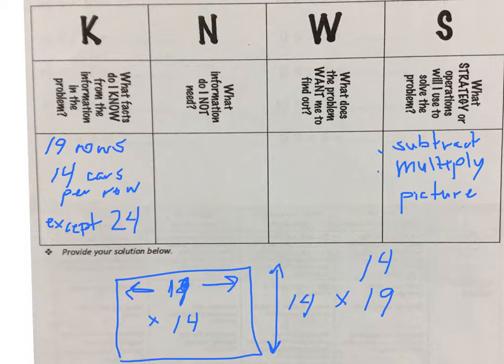What information do I not need? Some of the details, like it's a parking lot—maybe I don't need that detail as much. There's a lot of words I don't need.